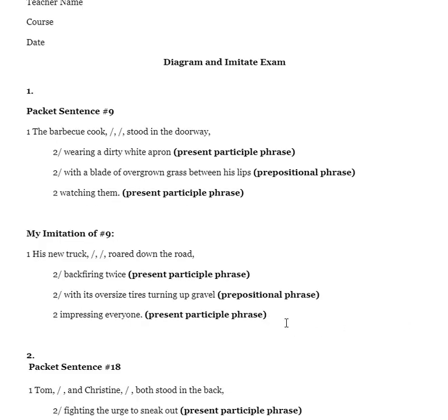So the format's the same for everybody. The imitations are going to be the thing that stick out, and this is what you're earning credit for. You're earning credit for your ability to diagram the original sentence, identify its phrases, and imitate the original sentence and identify its phrases. And you have to do that, you know, three times if you're in the regents class, five times if you're in the honors class.